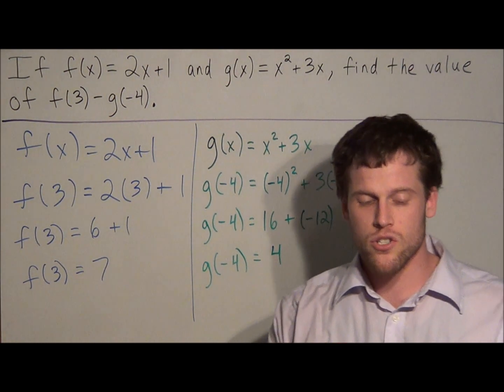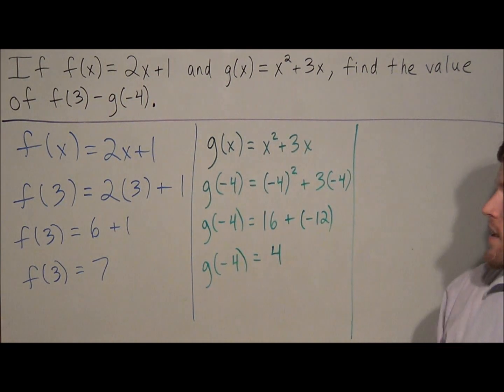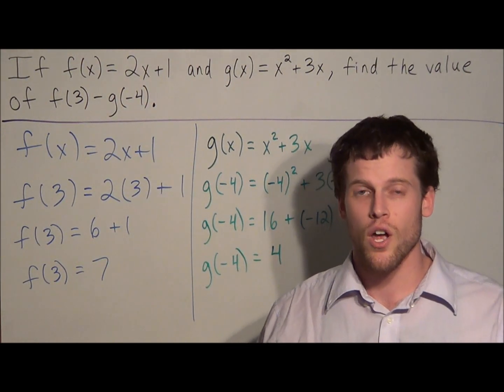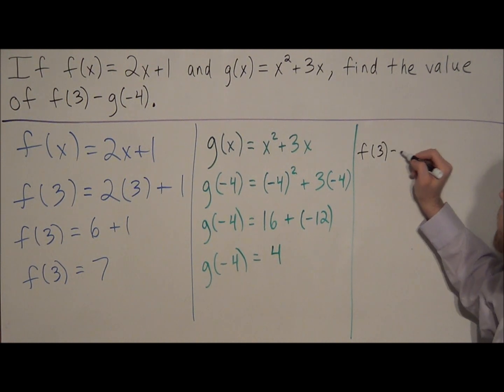So now we have enough information to close this problem out. So we look at what the question was asking us to find. They wanted us to evaluate f of 3 minus g of negative 4. So we write this out, we're looking for f of 3 minus g of negative 4.